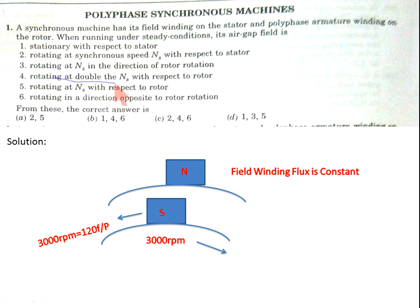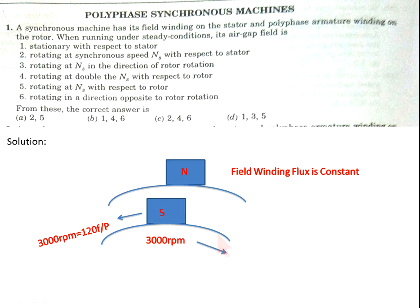Statement 4: air gap field rotating at double speed NS with respect to rotor. If we sit on the rotor, the rotor is running at 3,000 rpm and the rotating magnetic field is running in the opposite direction at 3,000 rpm, so with respect to the rotor it appears to run at 6,000 rpm — that is double speed. So statement 4 is correct.